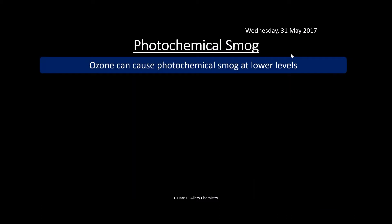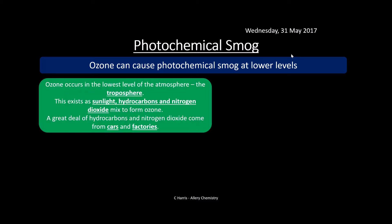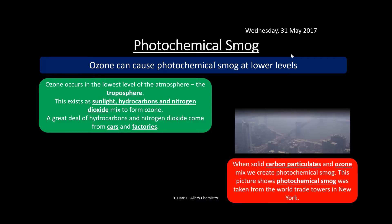Let's look at photochemical smog. Ozone is good in that it can protect us from harmful UV in the stratosphere, but the problem is ozone can also be formed at lower levels, and that is bad. In the troposphere — the lowest level of the atmosphere that we're in contact with — sunlight, hydrocarbons, and nitrogen dioxide mix to form ozone. A great deal of these hydrocarbons and nitrogen dioxides come from cars and factories.